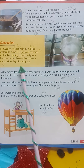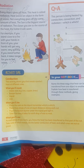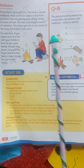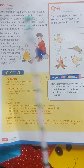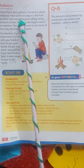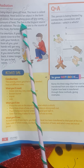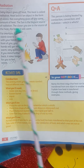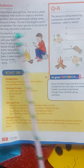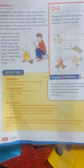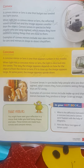Convection works because molecules are able to move easily (asani se) within liquids and gases. Next is radiation: every object (anasir) gives off heat (garmi). This heat is called radiation. Heat leaves an object in the form of waves (leheren). Not everything gives off the same amount (miktar) of heat. The sun is the biggest (bada) source of radiation.